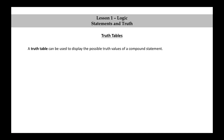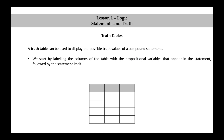Truth tables. A truth table can be used to display the possible truth values of a compound statement. We will create the truth table for the compound statement P∧Q as an example. We start by labeling the columns of the table with the propositional variables that appear in the statement, followed by the statement itself.